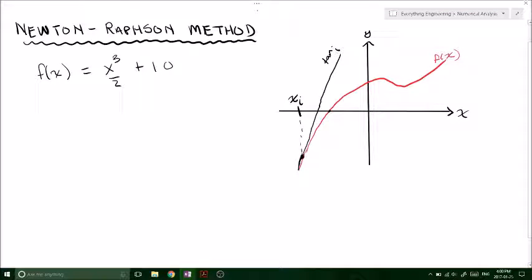So this is our tangent line to our first guess x i at this point. Now the idea is to use where it crosses 0, where our tangent line at the point crosses 0, that's going to be our x i plus 1. That's going to be our second root estimate.